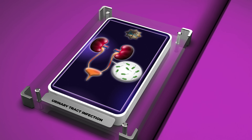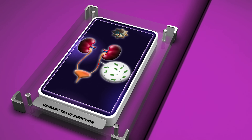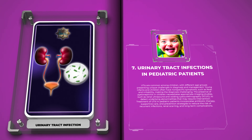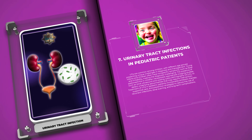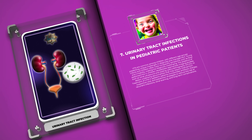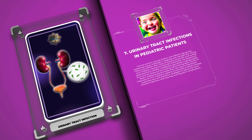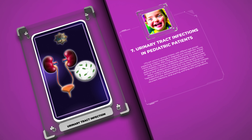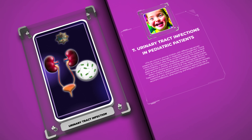UTIs are common among children, with different age groups presenting unique challenges in diagnosis and management. Young infants and children often have nonspecific symptoms such as fever and irritability, making the diagnosis challenging. The presence of pyelonephritis in children necessitates appropriate imaging studies, such as renal ultrasound and voiding cystourethrography (VCUG), to detect underlying abnormalities. Treatment incorporates antibiotic therapy, supportive care, and prevention strategies to reduce the risk of recurrent infections, renal scarring, and long-term complications.